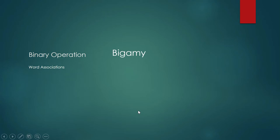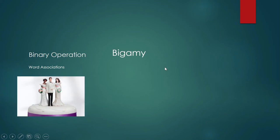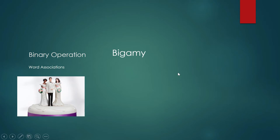Bigamy — what is bigamy? Bigamy means being married to two persons. This, by the way, is a crime. For example, a man marries a woman although he is already married to his first wife, and he did not reveal that he is already married. When the first wife discovers this, she can bring the husband to court and sue him for bigamy.